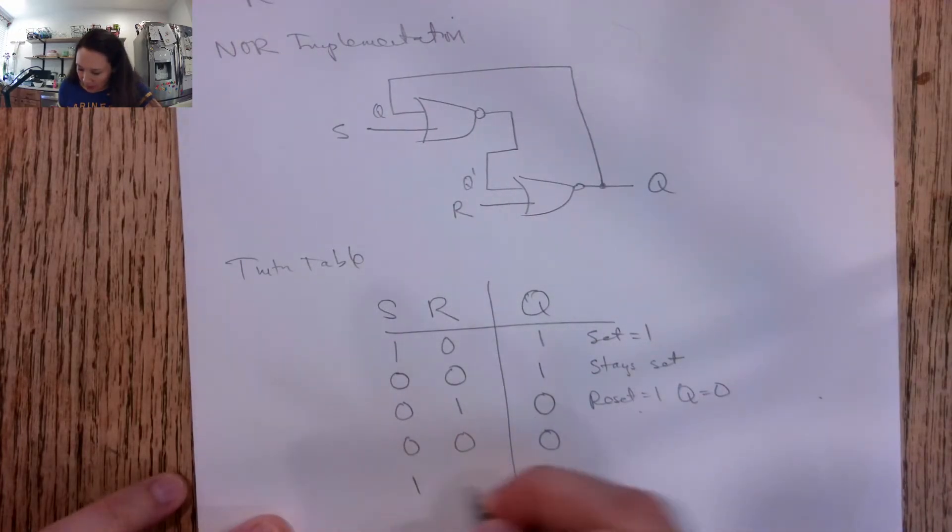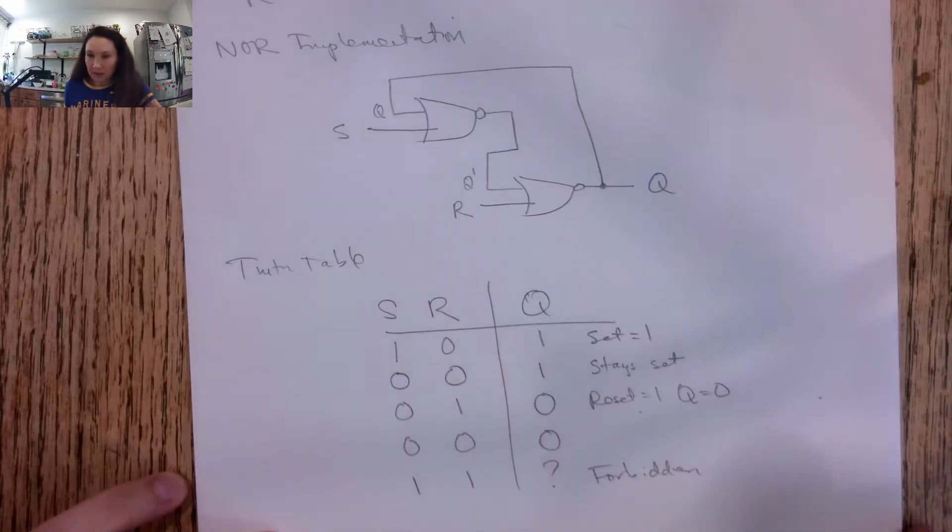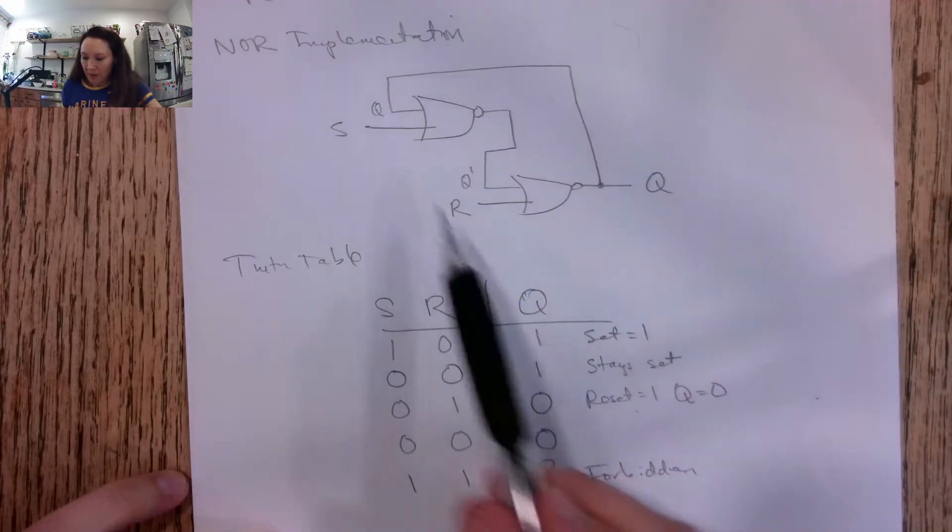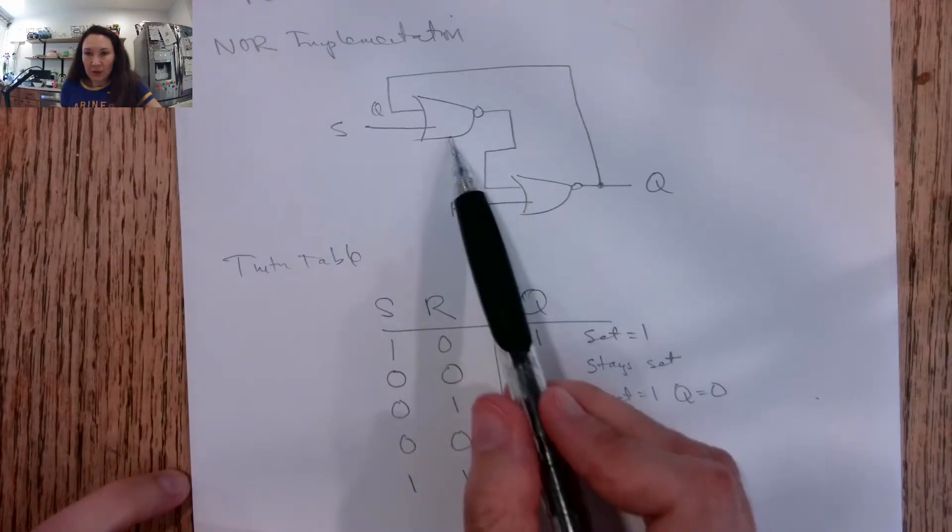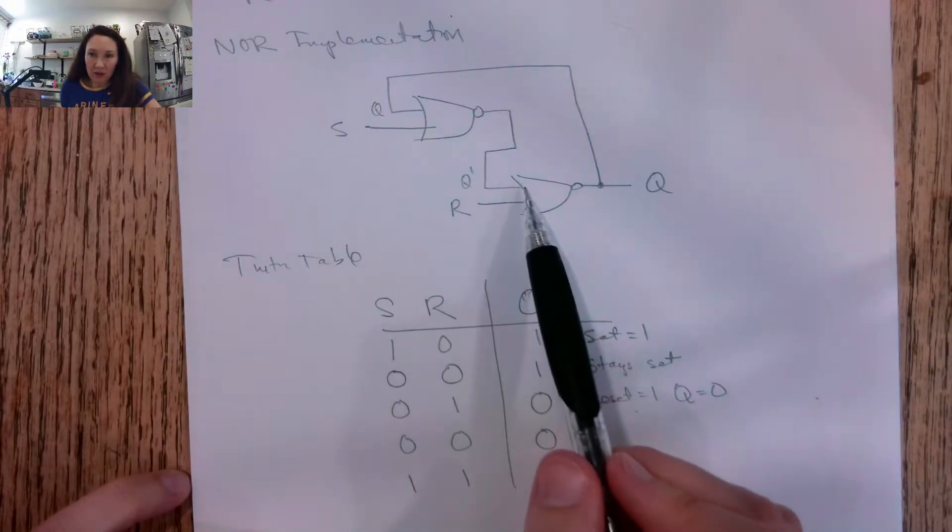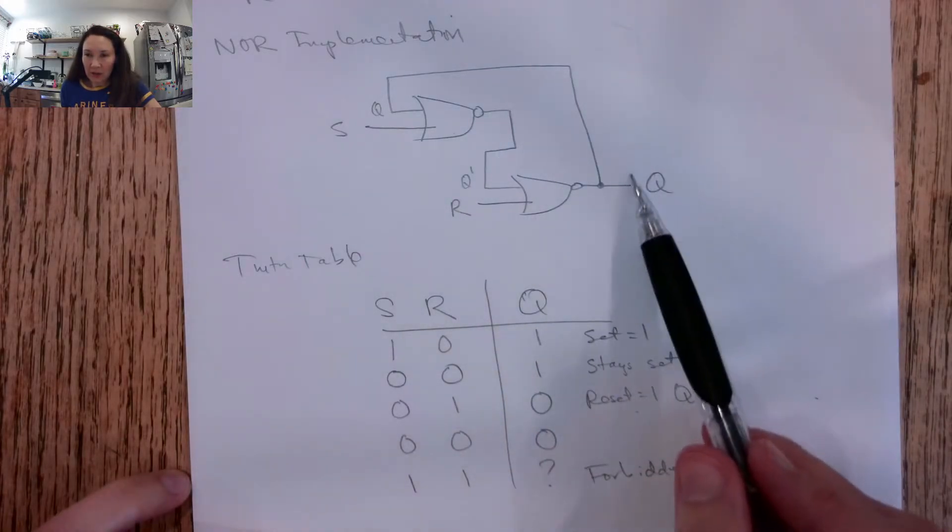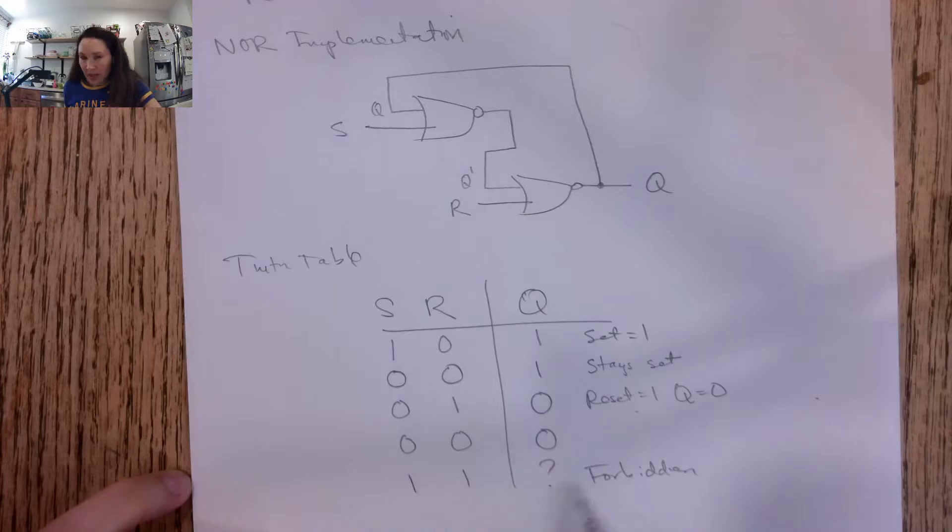The limitation to this SR latch is that we can't both set and reset this at the same time. We call this a forbidden or metastable state. The reason why it's considered metastable is because if we try to set and reset at the same time, chances are even if these two NORs are made by the same manufacturer, one is likely a little bit faster than the other. So whichever one where the output arrives first is going to give us the answer, and so this output is untrustable. We don't allow it - this is our forbidden state.